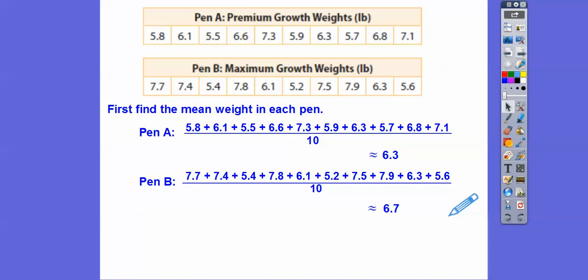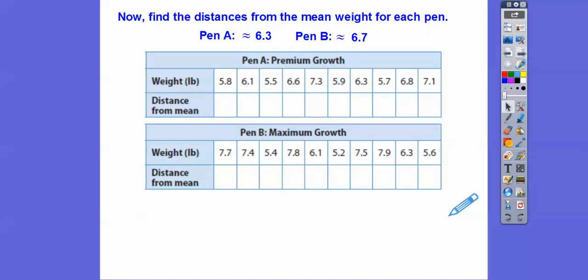Now what we're going to do is find the distances from the means for the weights in each pen. Before we deal with the decimals, just think of 58. 58 minus 63 is negative 5. So, 5.8 minus 6.3 is going to be negative 0.5. But distances from that is going to be a positive 0.5. I'm just saving time. I'm doing each number minus the mean absolute value.